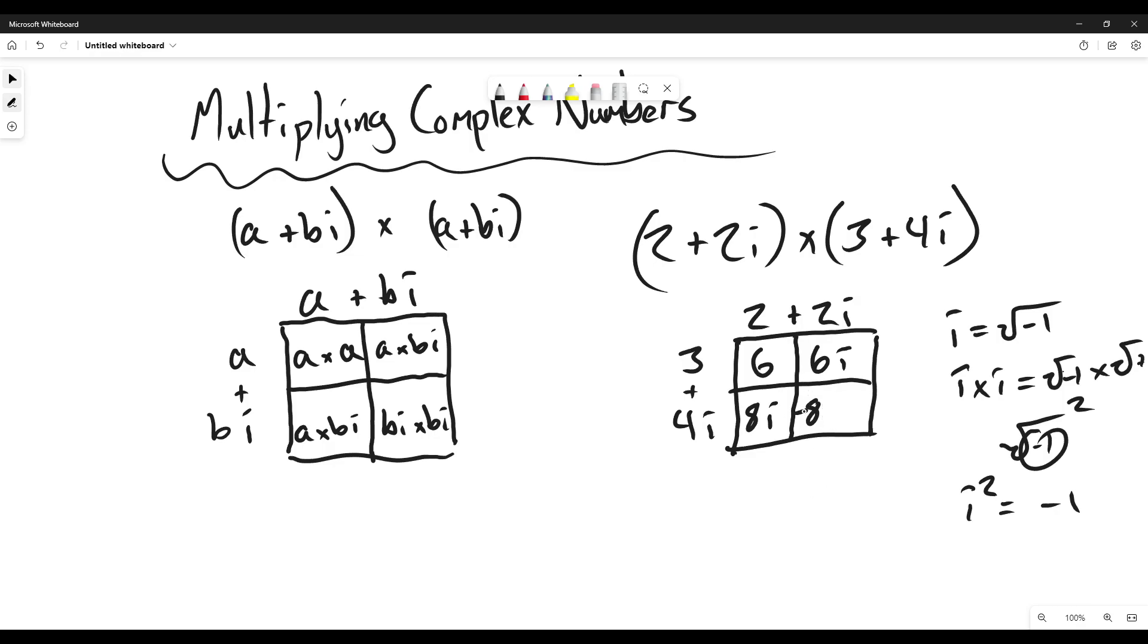Negative 8, just like that. So now we add everything in the box. So we have 6 + 6i + 8i - 8, or you can say plus negative 8 if you prefer.